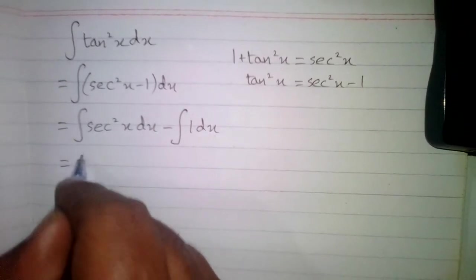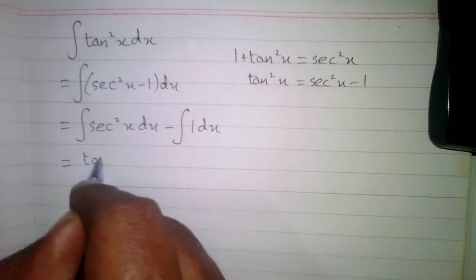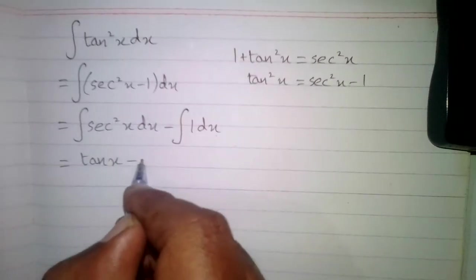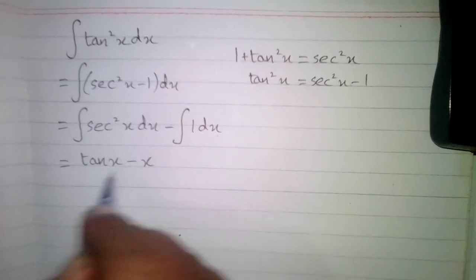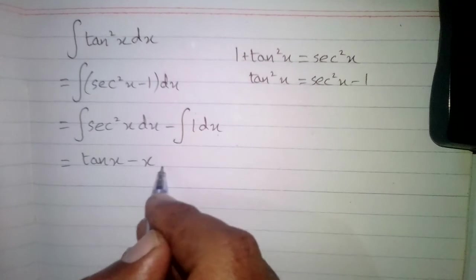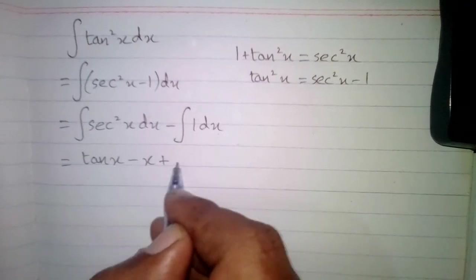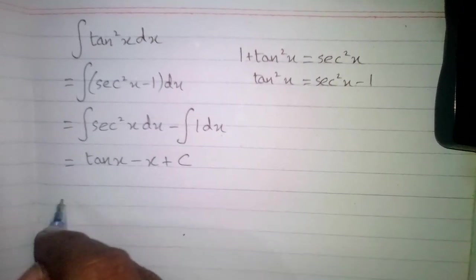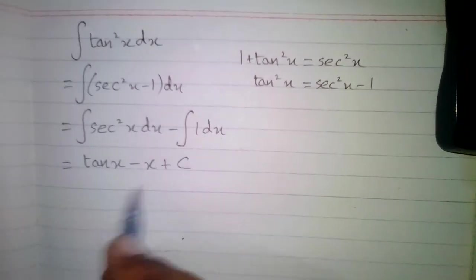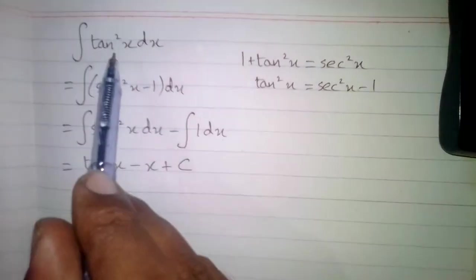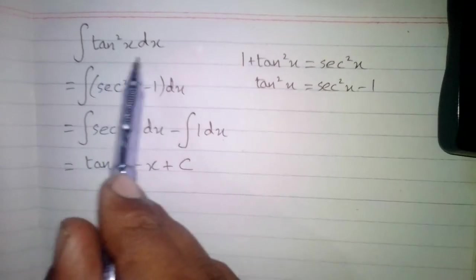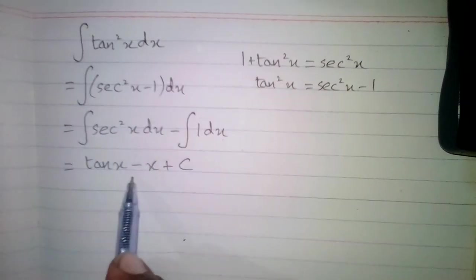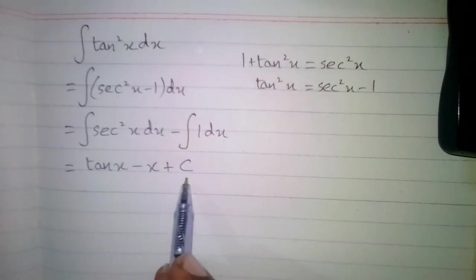The integral of 1 is x, so we have tan(x) minus x plus C, where C is the constant. So the integral of tan²x with respect to x is tan(x) minus x plus C.